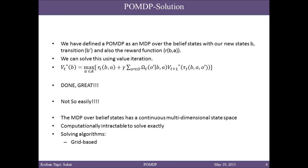Some suggest using a grid-based algorithm for this. You pick some set of points in the belief space and then try to interpolate them so that it covers the whole belief set. There are other methods as well. We also have a quick look at BOMDPs. We hope you are interested in this subject and want to learn more. Thanks.